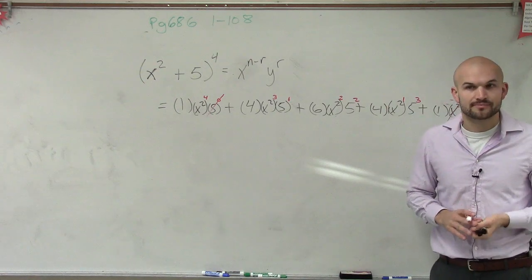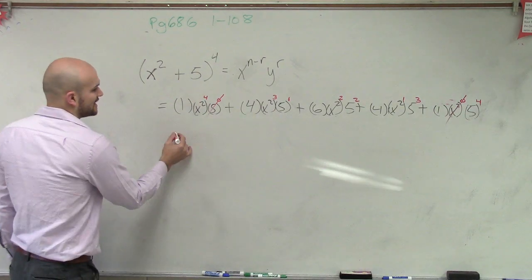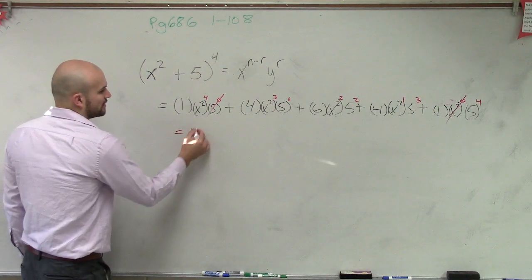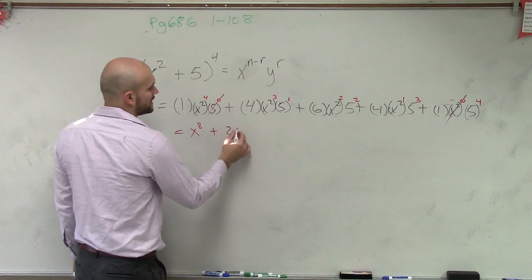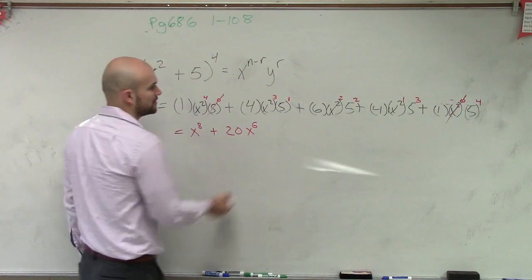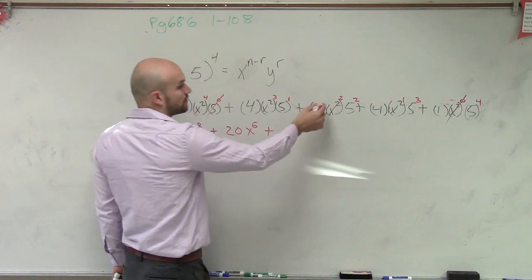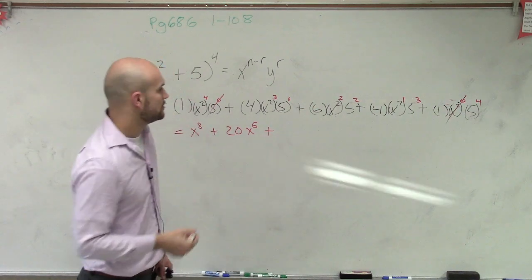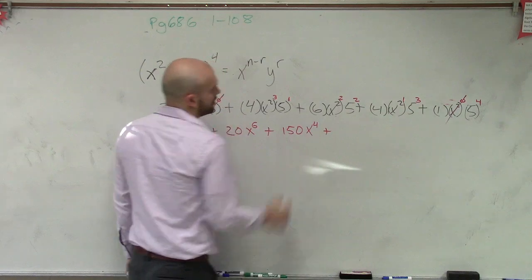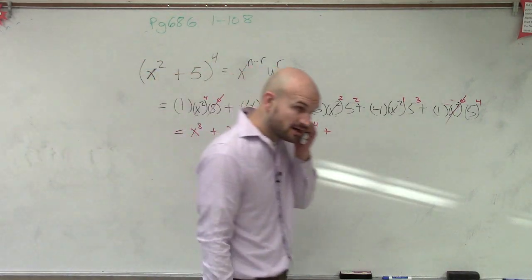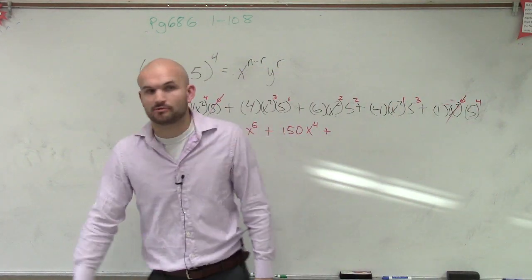So now what we need to do is just simply simplify our process. So remember, when you take an exponent and raise it to a power, that's going to leave you multiply. So x squared to the fourth is x to the eighth, plus x squared cubed is going to be x to the sixth, and 4 times 5 is 20. So we can just multiply those. Plus 5 squared is 25, times 6 is 150.